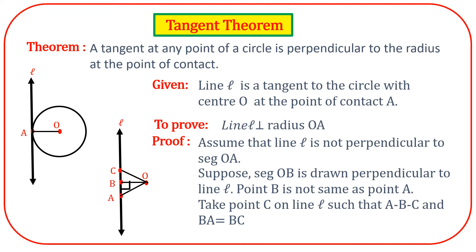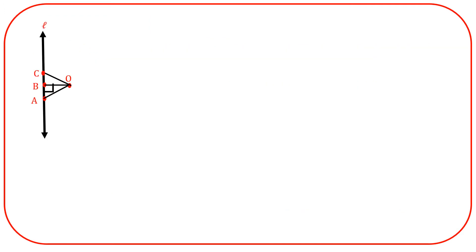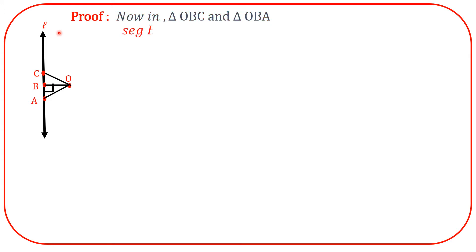We join OC and OA. Now write down the proof. In triangle OBC and triangle OBA: segment BC is congruent to segment BA, by construction.